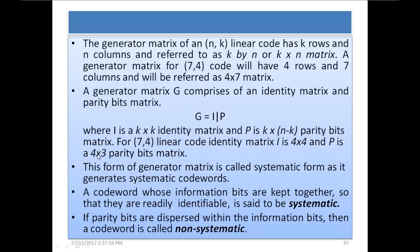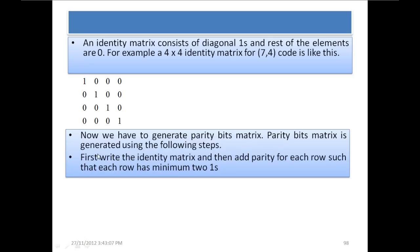This form of generator matrix is called systematic form, as it generates systematic codewords. A codeword whose information bits are kept together so they are readily identifiable is said to be systematic. If parity bits are dispersed within the information bits, the codeword is called non-systematic. An identity matrix consists of diagonal ones with all remaining elements zero. For example, a 4×4 identity matrix for the (7,4) code has a diagonal of 1s with the rest zeros.